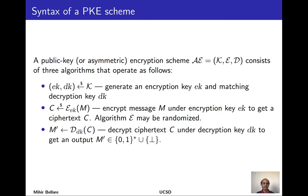As usual when we start the study of a new primitive we begin with syntax. To specify a scheme for asymmetric or public key encryption, we must provide three algorithms for key generation, encryption, and decryption. Key generation, when run, is randomized and will produce two keys: an encryption key and a matching decryption key. The encryption algorithm takes the encryption key and a message and computes the ciphertext, and may be randomized.